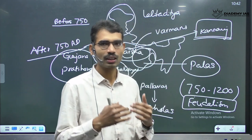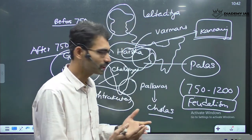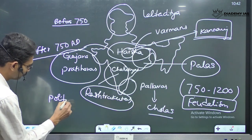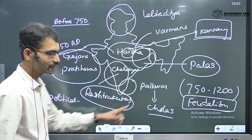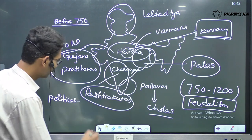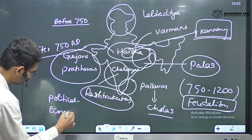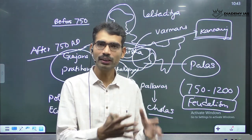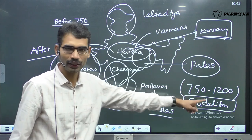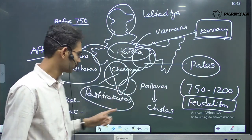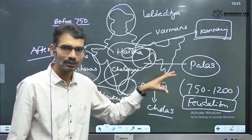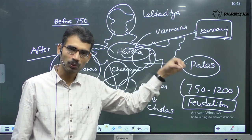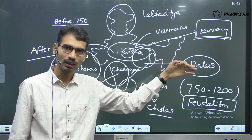Under these circumstances, UPSC is asking questions about what was the political condition — that is majorly feudalism. And the second one is economic activities. Agriculture is the dominating profession of that time, and in this time period, agriculture dominated. Trading activities were there, but not dominant like the post-Mauryan period or during the early Gupta period.